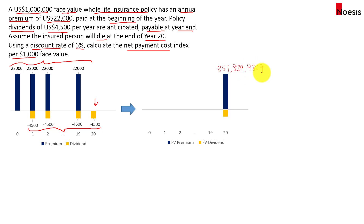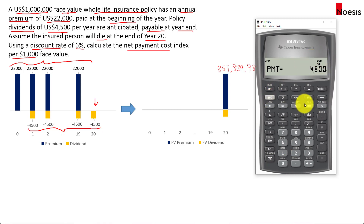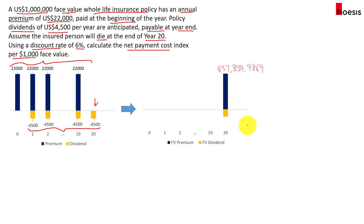For the dividends, change PMT to $4,500. The rest remains the same, but change the mode back to END for ordinary annuity by pressing Second PMT. Compute the future value and we get $165,535.16.